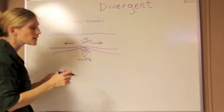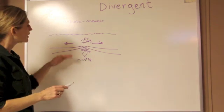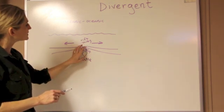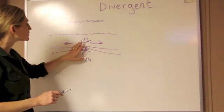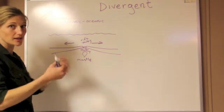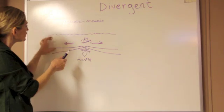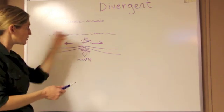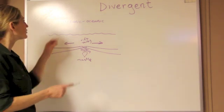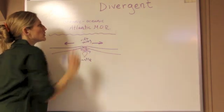Anytime there's movement along a fault we see earthquakes, and we see the formation of new crust. The rift valley sits pretty high overall in the ocean because this new crust material is very buoyant and very warm. As the plate moves away from the ridge, it cools, becomes denser, and starts to sink down — so ocean depth increases farther away from the rift valley. A good example would be the Atlantic mid-oceanic ridge.